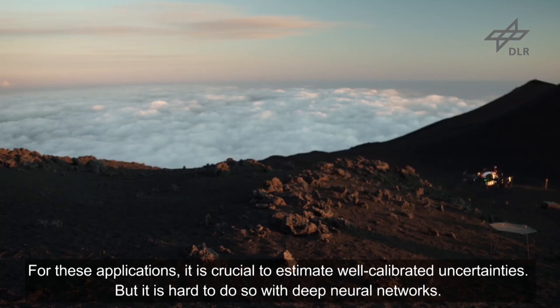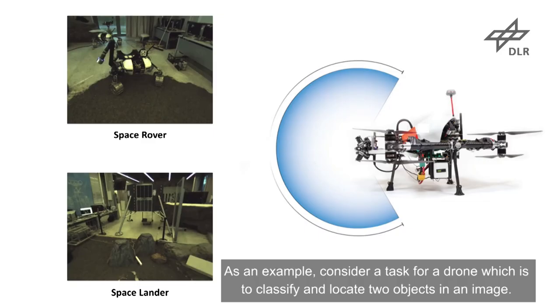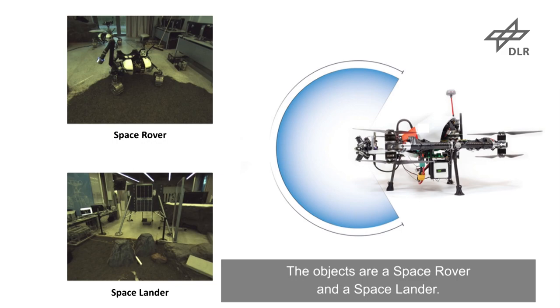But it is hard to do so with deep neural networks. As an example, consider a task for a drone which is to classify and locate two objects in an image. The objects are a space rover and a space lander.